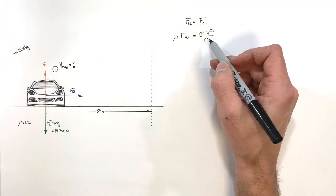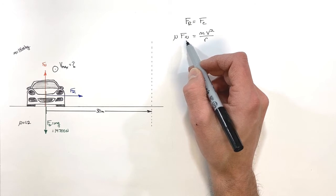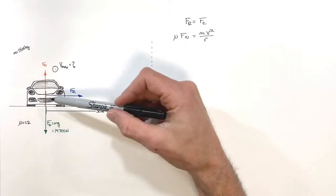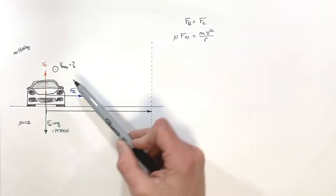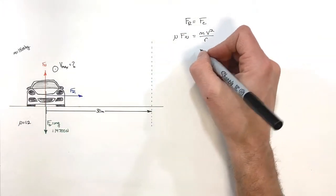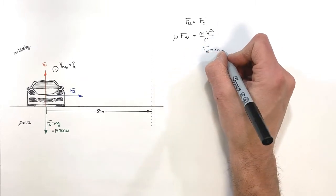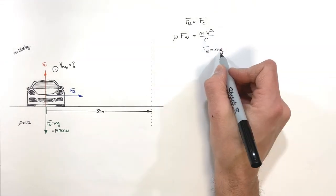Now there's an issue here, and that is we don't know the magnitude of Fn, or the normal force. But realize this car is just sitting on the ground vertically—it's not accelerating. This car is accelerating in the horizontal axis here. And so what this means for us is that the normal force is equal to the weight.